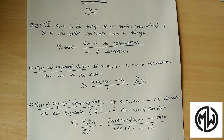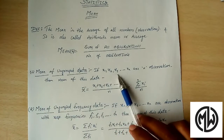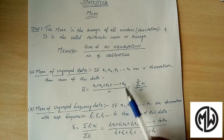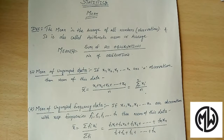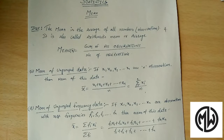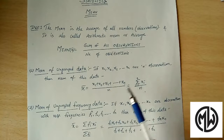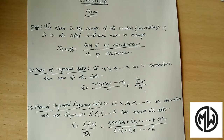We will discuss each type. First, mean of ungrouped data: if we have observations x1, x2, x3, up to xn, then the mean x-bar equals (x1 + x2 + x3 + ... + xn) divided by n — that is, sum of all observations divided by number of observations. Ungrouped data means the observations are not divided into any group; you simply apply this formula.